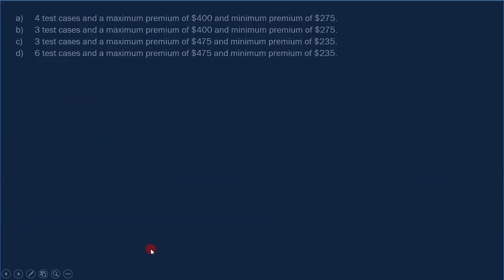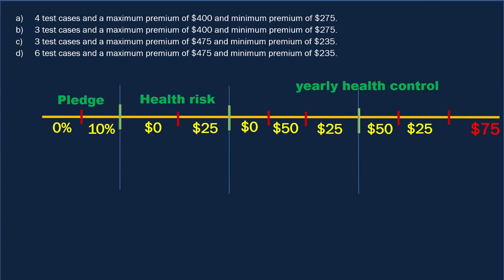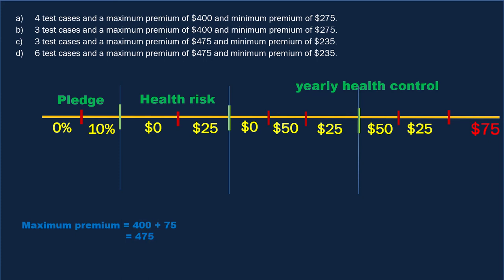Now we need to find out the maximum and minimum premium possible. Calculating the maximum premium is simple. We know that the premium is $400, and if you are a smoker and didn't participate in any program, you have to pay an additional $75. That means $400 plus $75, which is $475. So the maximum premium one can pay is $475.